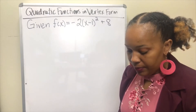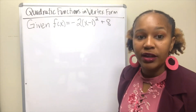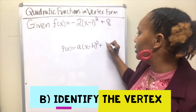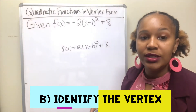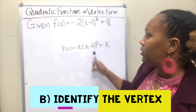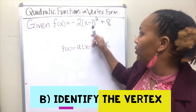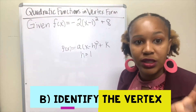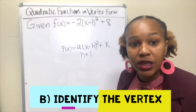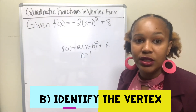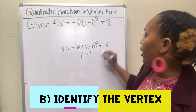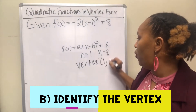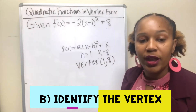For part b, we want to identify the vertex. Since this is of the form f of x equals a times x minus h squared plus k, we can easily identify h and k. H is inside the parentheses with x. The expression says x minus 1, so h equals 1 — it's the opposite of what's written inside the parentheses. K is outside the parentheses, so we take it at face value: k equals 8. Therefore the vertex, which is the point h comma k, is the point 1 comma 8.